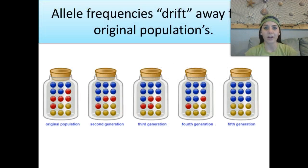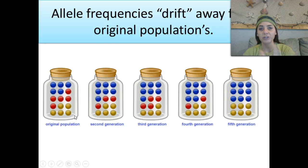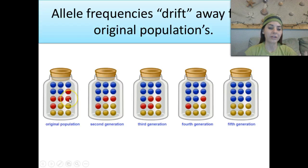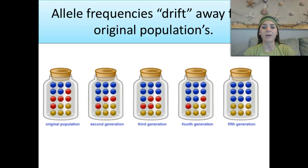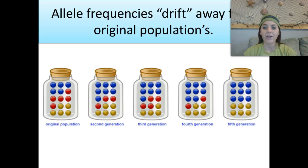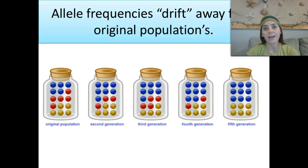Allele frequencies drift away from the original population. Looking at this example, we start with 5 blue spheres, 5 red spheres, and 5 yellow spheres. Second generation: 7 blue, 3 red, and 5 yellow. Third generation: 7 blue, 4 red, and 4 yellow. Fourth generation: 8 blue, 2 red, and 5 yellow. By the fifth generation, we have 9 blue spheres and 6 yellow — the red allele has been lost. So it's drifted away from that original population.